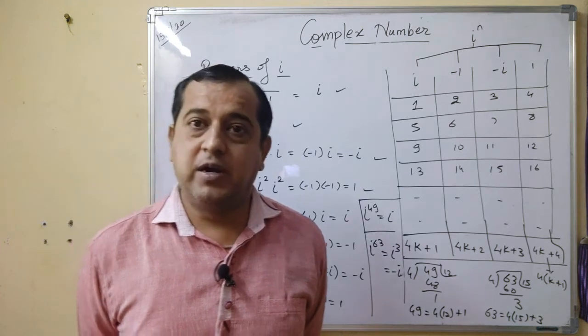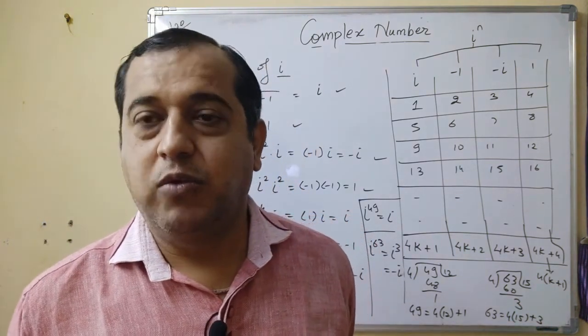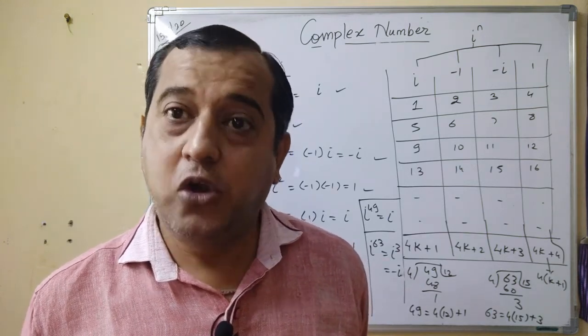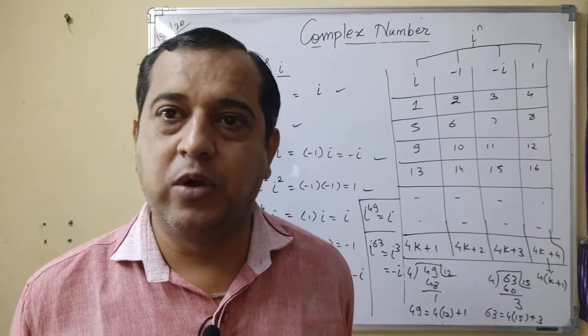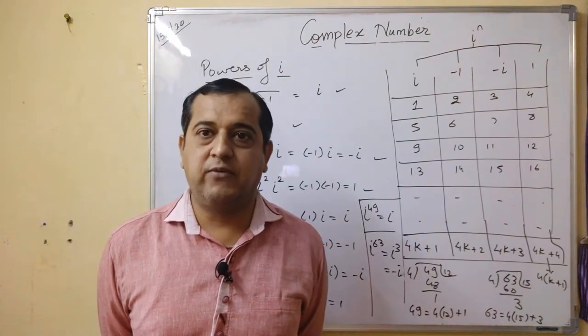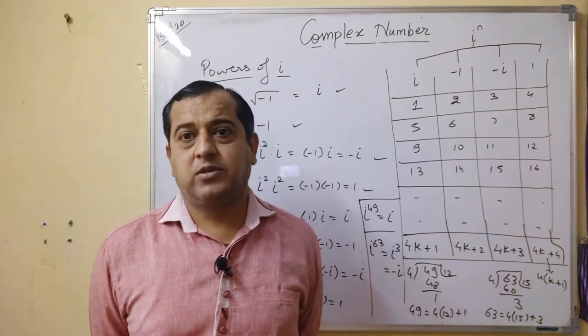For i⁹⁸, when 98 is divided by 4, remainder is 2, which gives -1. For i¹⁰², when 102 is divided by 4, remainder is 2, which gives -1.